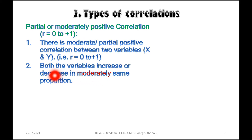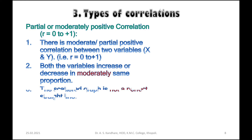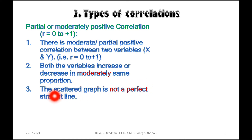The scatter graph is not a perfect straight line. In partial or moderately positive correlation, the dots are somewhat away from the perfect straight line, unlike in perfect positive correlation.